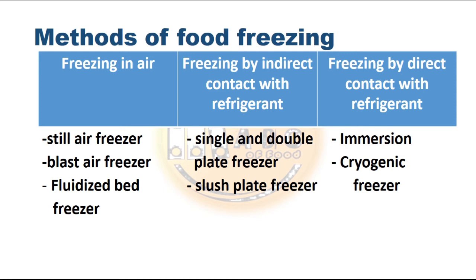In freezing in air there are three types of freezer: still air freezer, blast air freezer, and fluidized bed freezer. In freezing by indirect contact, we have single and double plate freezers and solid plate freezers. In freezing by direct contact with refrigerant, we have the immersion type and the cryogenic freezer.